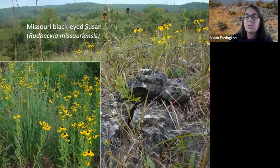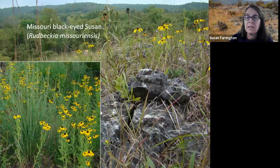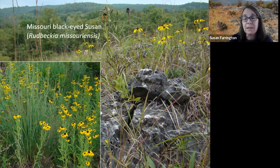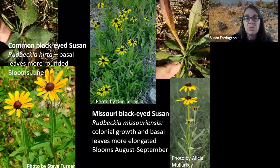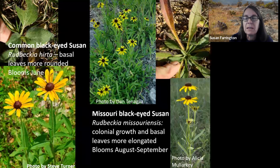One of the best glade indicators — a plant I never see unless I'm truly on some sort of calcareous glade — is Missouri black-eyed Susan, Rudbeckia missouriensis. If you see it on a prairie, you'll be looking at a little rocky glade outcrop within that prairie. This is a tough one to identify due to its strong resemblance to the common black-eyed Susan, Rudbeckia hirta, which is found just about anywhere, including glades. To distinguish Missouri black-eyed Susan from the common, look for colonial growth, slightly smaller flower heads, strap-shaped basal leaves, and a later bloom time of August to September versus June and maybe July. Rudbeckia hirta tends to be annual, just a plant here and there, whereas Missouri black-eyed Susan is definitely a colonial perennial.